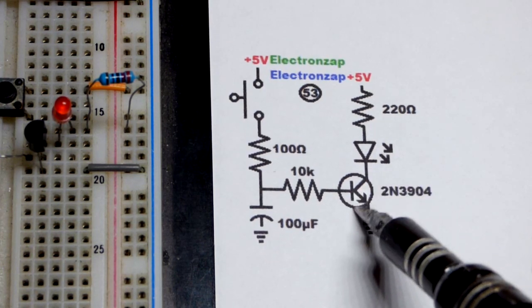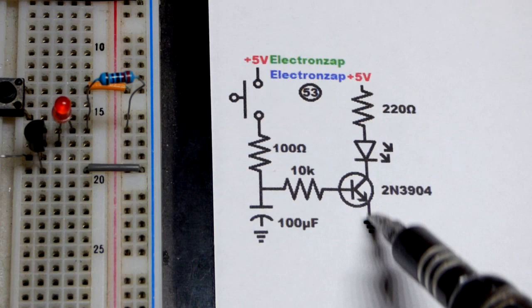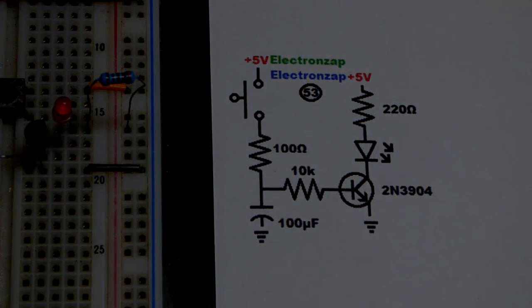Then we will get less and less current from collector to emitter. The LED will dim over time.